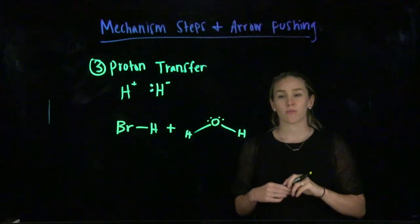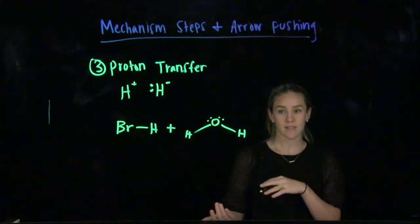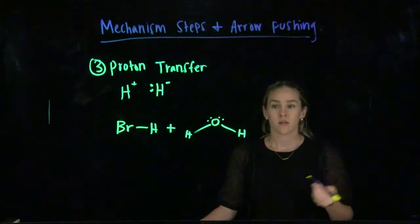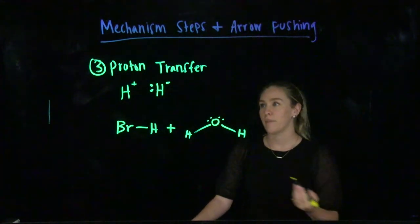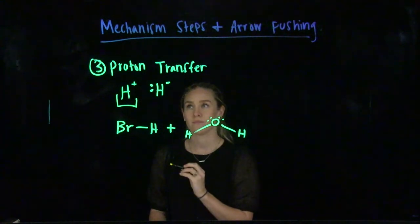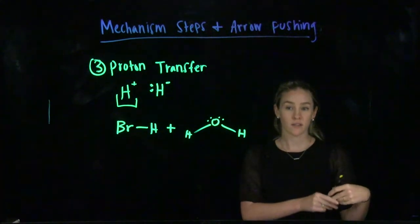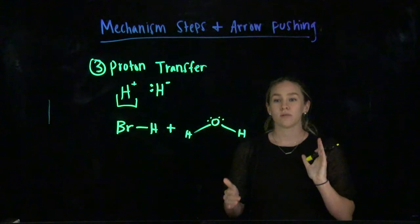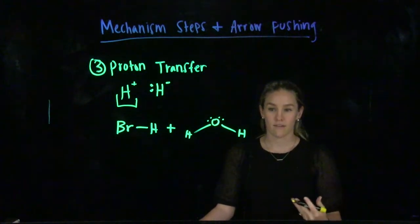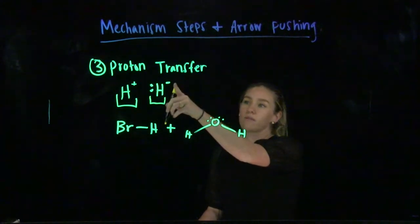Our next mechanism step is called a proton transfer. Before we discuss how it works, we need to establish what a proton is. In organic chemistry, a proton is a hydrogen that lost an electron — so a positively charged hydrogen. This is important to distinguish from a hydride, which is the anion of a hydrogen atom, meaning the hydrogen has an extra electron and therefore a negative charge.